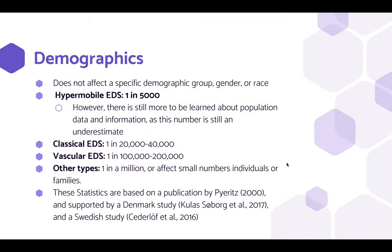EDS does not affect a specific demographic group, gender, or race. Hypermobile EDS, the most common type, affects around 1 in 5,000 people. However, since it's difficult to diagnose, this number may be an underestimate. Classical EDS affects between 1 in 20,000 to 1 in 40,000 people, and vascular EDS affects between 1 in 100,000 to 1 in 200,000 people. Other types of EDS are much less common, and these statistics are based on a variety of studies.